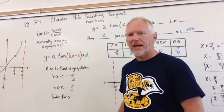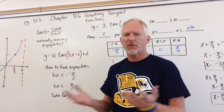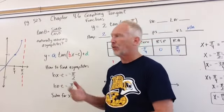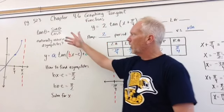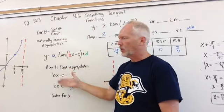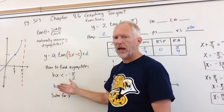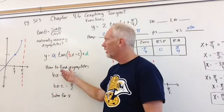Hi, quick little video on graphing tangent graphs, except this time we've got a little bit of a phase shift for us. So graphing tangent graphs, chapter 4.6. Recall tangent is sine over cosine. So we do have some naturally occurring asymptotes that we want to look for.